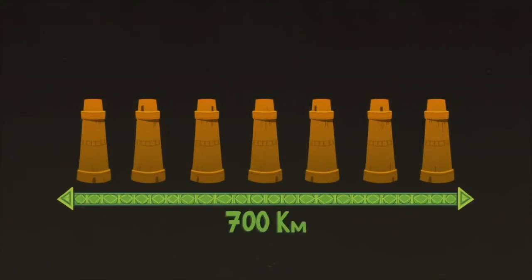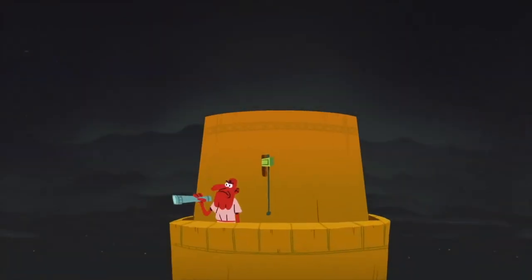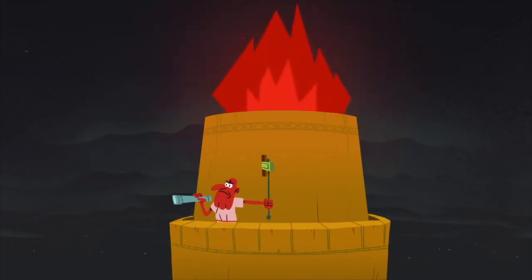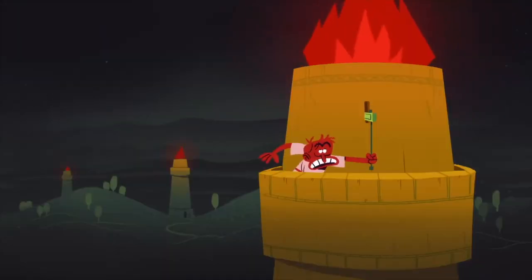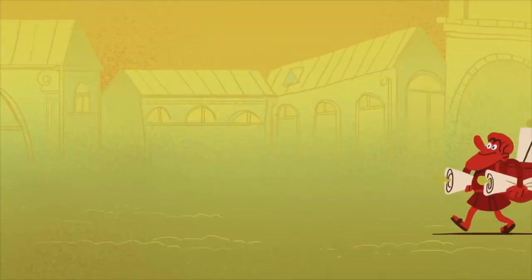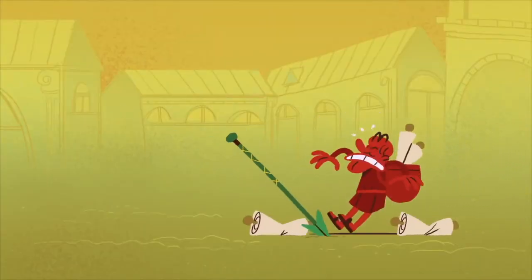Stretching more than 700 kilometers, this beacon system allowed the edge of the empire to warn the emperor of invading armies within one hour of sighting them at the border. But their advances couldn't protect the empire forever.